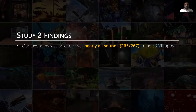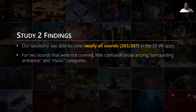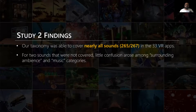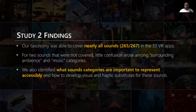The few sounds that were not covered were due to some confusion between surrounding ambient and music sounds. The difference is that surrounding ambience are sounds that originate from inside the VR world, while music is a background sound, and this distinction should have been made more clear in our evaluation. Beyond our findings, we also identified categories that are important to represent sound accessibility and how we can develop visual and haptic substitutes for them, which are described in the paper.